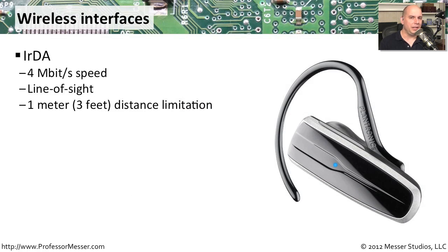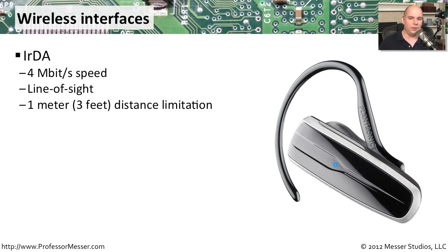Wireless technologies are a little bit more difficult to determine distances for because of all the variables involved, but we can come pretty close. With infrared technologies — IrDA — those tend to run at about 4 megabits per second. You have line of sight, and they're commonly used between laptops and printers. We don't see them used much any longer, but they're still on some legacy systems. The distance is very, very short — about 1 meter, about 3 feet — and beyond that it's not able to communicate.